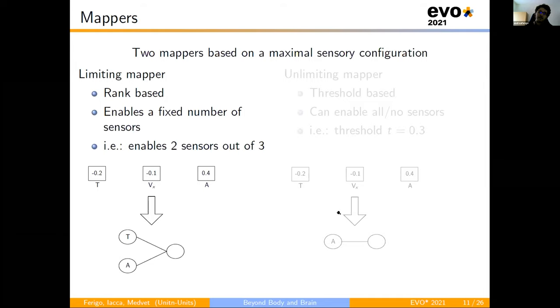In particular, we developed two mappers that are based on maximal sensory configuration, meaning that we fixed the maximum number of sensors in the robot, and thanks to this, we have a fixed genome, fixed length genome. And the two mappers are the limiting and the unlimited. The limiting mapper ranks the sensors based on their maximum weight and keeps a fixed number. For example, if we have a simple robot with a single voxel and a maximum sensory configuration with three sensors, the touch, the velocity, and the area, with this simple genome, the limiting mapper will enable the touch and the area sensor.